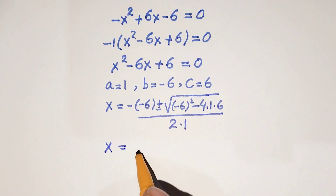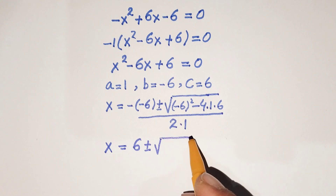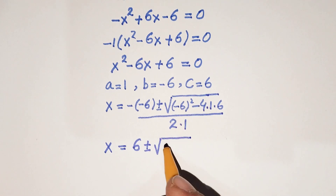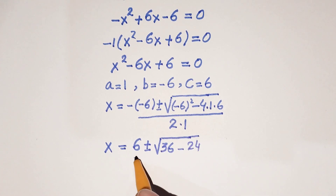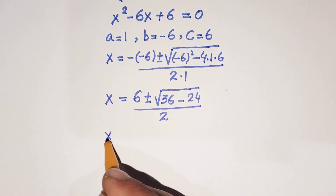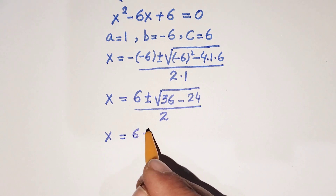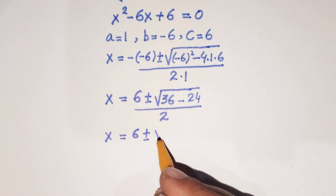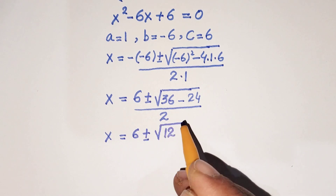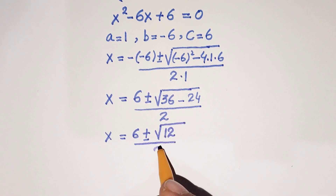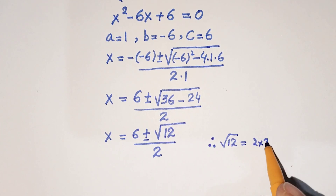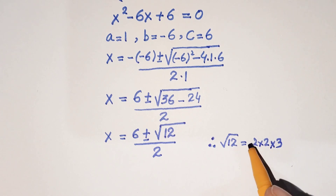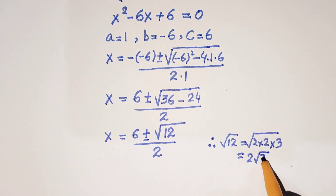Simplifying: x equals 6 plus or minus the square root of 36 minus 24, all divided by 2. That gives x equals 6 plus or minus the square root of 12, divided by 2. Now, 12 can be written as 4 times 3, so the square root of 12 equals 2 times the square root of 3.